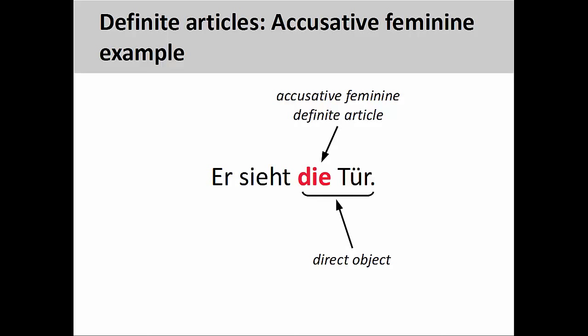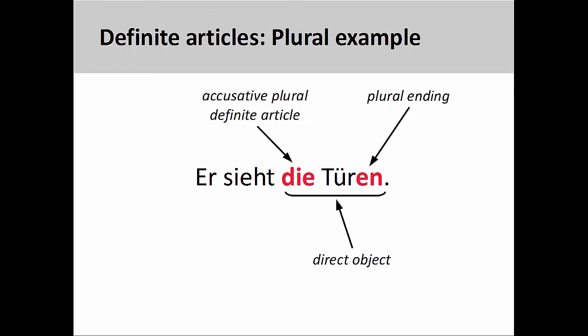But how do we know it's not plural? In the sentence er sieht die Türen — he sees the doors — the ending on the noun informs us that we are dealing with a plural form. Since we still have er as the subject, Türen must still be the direct object, and Die is a plural definite article in the accusative case.